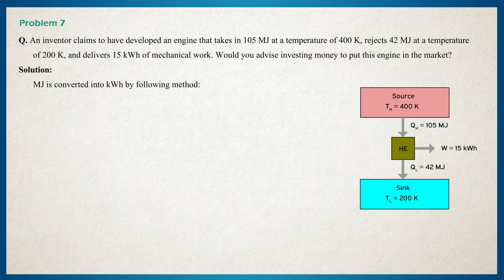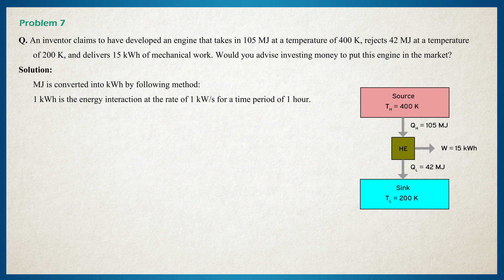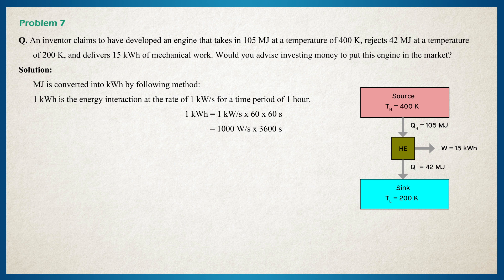The megajoule is converted to kilowatt hour by the following method. 1 kilowatt hour is the energy interaction at the rate of 1 kilowatt per second for a time period of 1 hour. So 1 kilowatt hour is equal to 1 kilowatt times 60 times 60 seconds, which is equal to 1000 watts times 3600 seconds, which is equal to 3.6 times 10 raised to 6 joules, that is 3.6 megajoules.